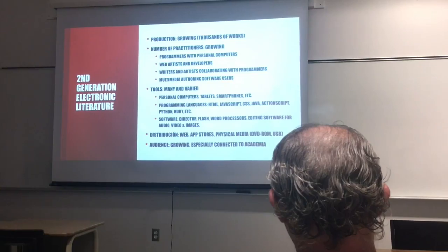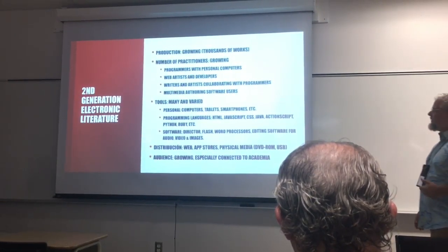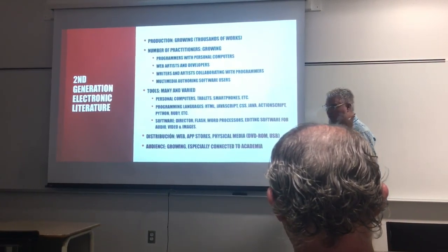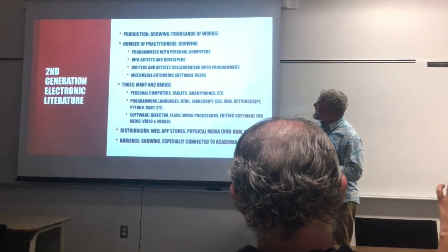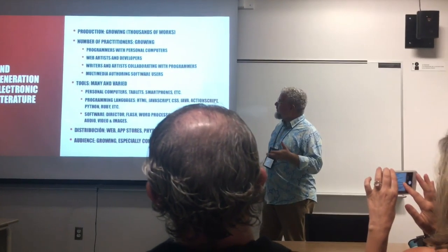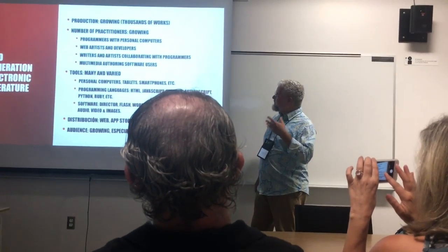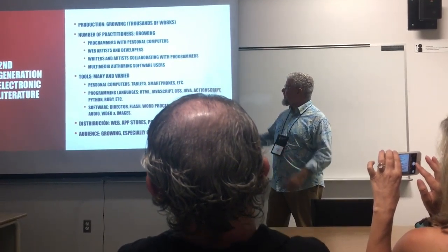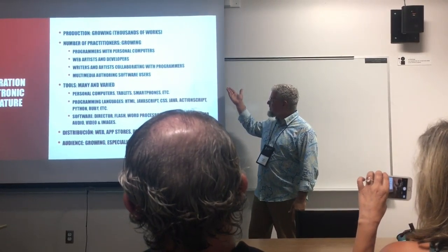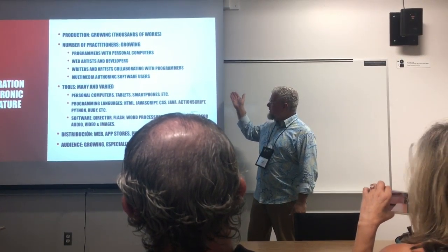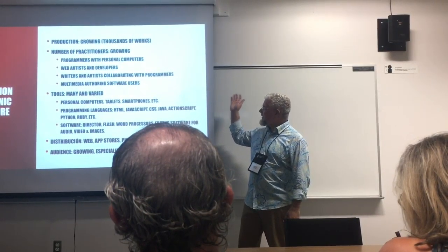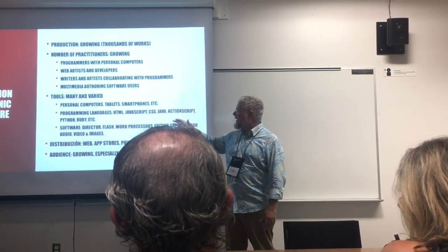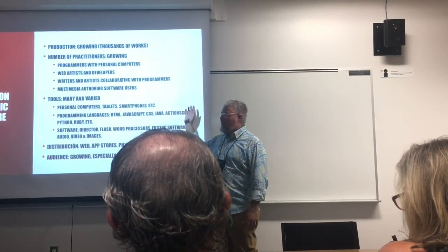Now the second generation. This is growing — people have personal computers. You have thousands of works, a growing number of practitioners in the thousands. The kinds of people producing things are programmers with personal computers, web artists and developers, writers and artists collaborating with programmers, and multimedia authoring software users.